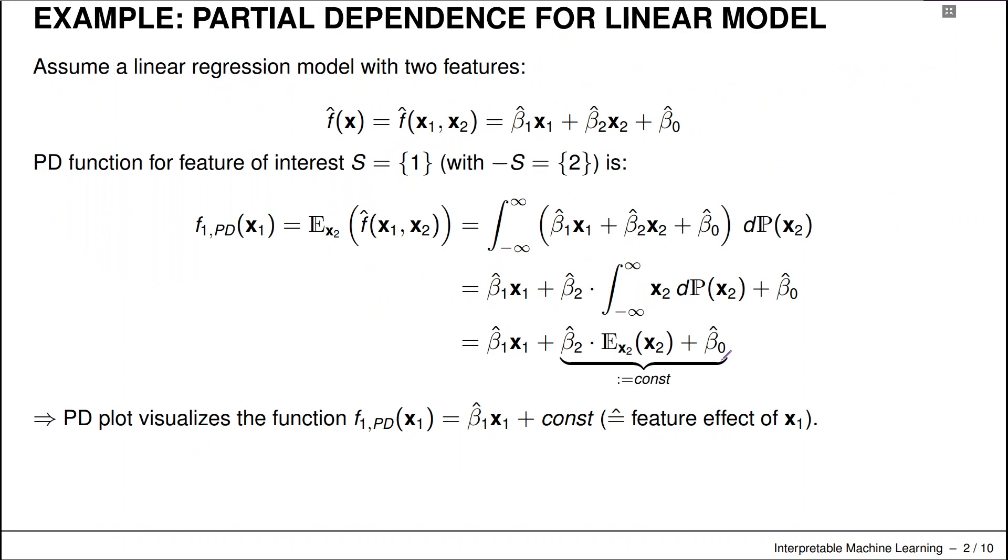So before we do this in an example, let's just take a theoretical look at a linear regression model. We'll take a simple linear model with two features and coefficients beta one and beta two and an intercept beta zero. And we'll compute now the partial dependence function for the feature of interest x1.